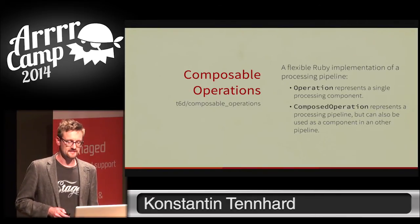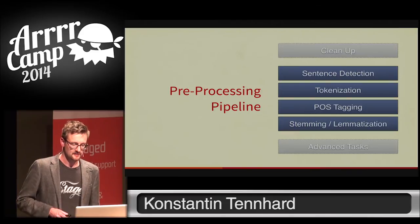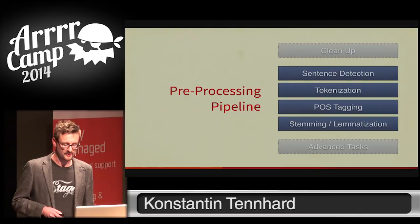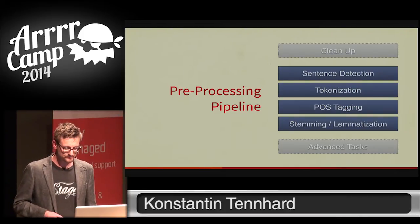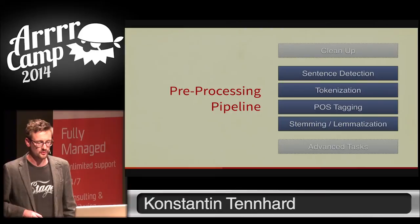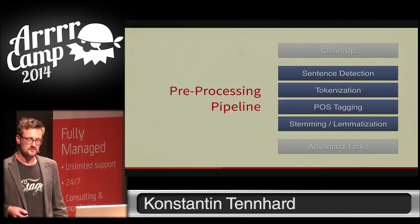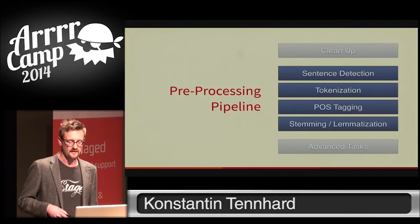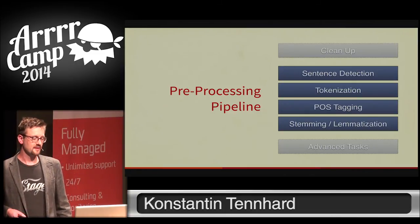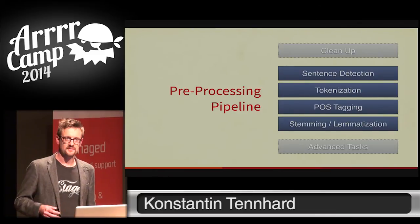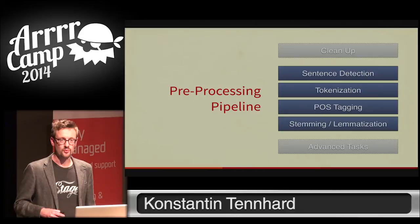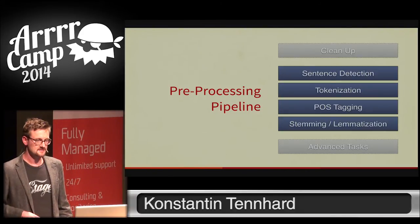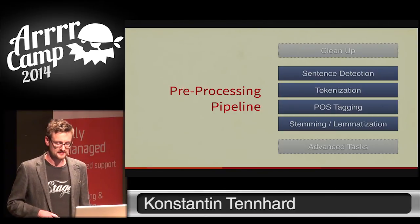A typical NLP pipeline looks like this: you start by fetching data, then perform cleanup, followed by sentence detection, tokenization, POS tagging, and finally stemming and lemmatization. Once you reach this point, you can perform more advanced tasks, but these basic preprocessing steps are what everyone has to do when dealing with textual data.